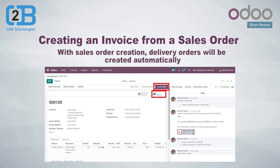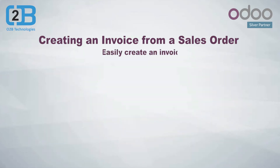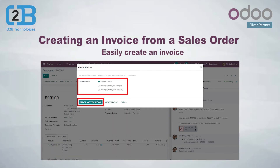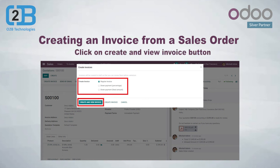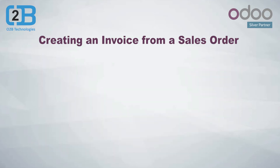Now you will see the delivery order created automatically. The warehouse team will work on the delivery order and start packing the items and then deliver them. Now create an invoice by clicking on the create invoice button. You will see multiple options such as regular invoice, down payment by percentage, and down payment by fixed amount.